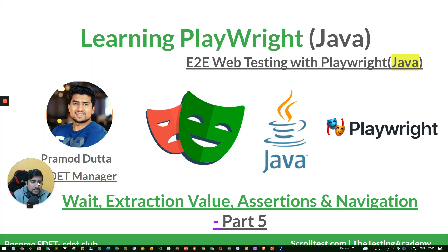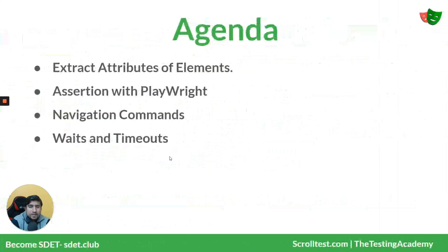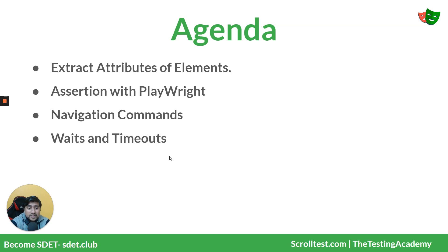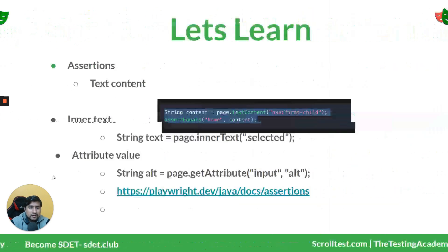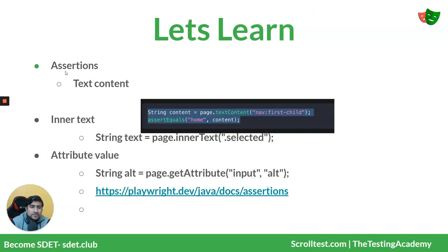The agenda for this video is basically extracting values from elements, which is really important, assertions — how you can add your own assertion in Playwright Java — navigation commands, and a couple of waits and timeouts we should know. For assertions, most of you have already seen them. You can leverage TestNG assertions by default, or if you are comfortable with JUnit assertions, you can use those directly in Playwright as well.